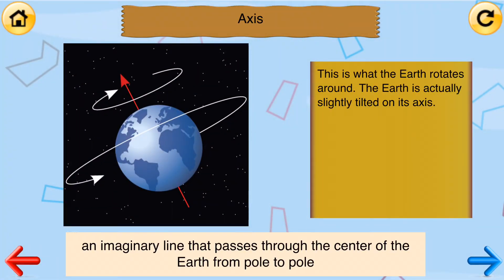Axis. An imaginary line that passes through the center of the Earth from pole to pole. This is what the Earth rotates around. The Earth is actually slightly tilted on its axis.